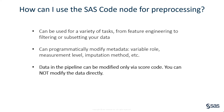The first use case highlights using the SAS Code node for preprocessing your data prior to model building. This can be anything from tasks for feature engineering to filtering or subsetting your data. You can also change metadata for any variable other than your target — examples include changing the variable's role, measurement level, imputation method, etc. You can do this from the Data tab of Model Studio or in a Manage Variables node, but you might need the ability to change it programmatically.